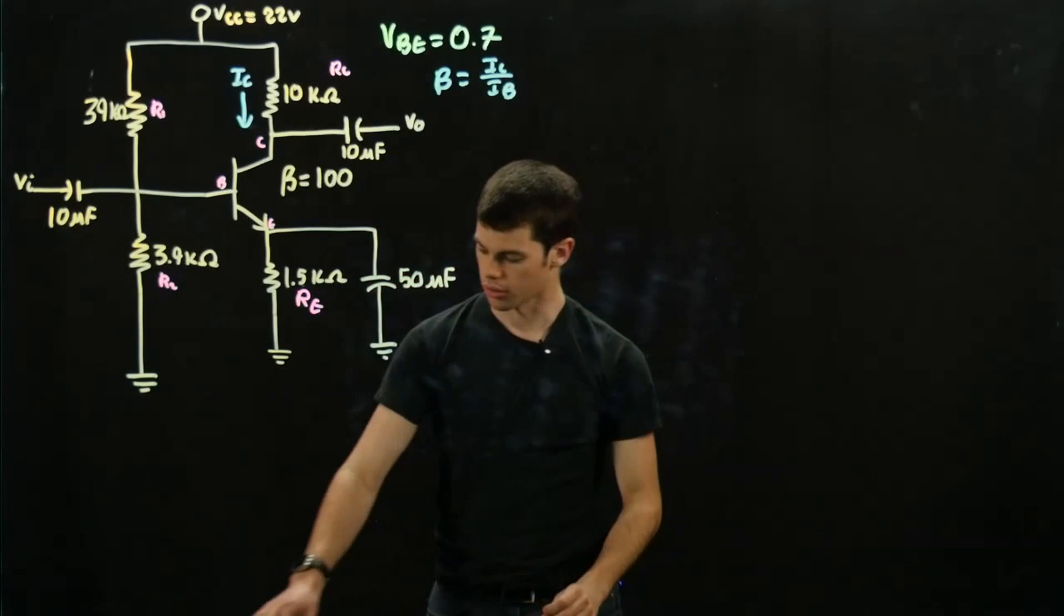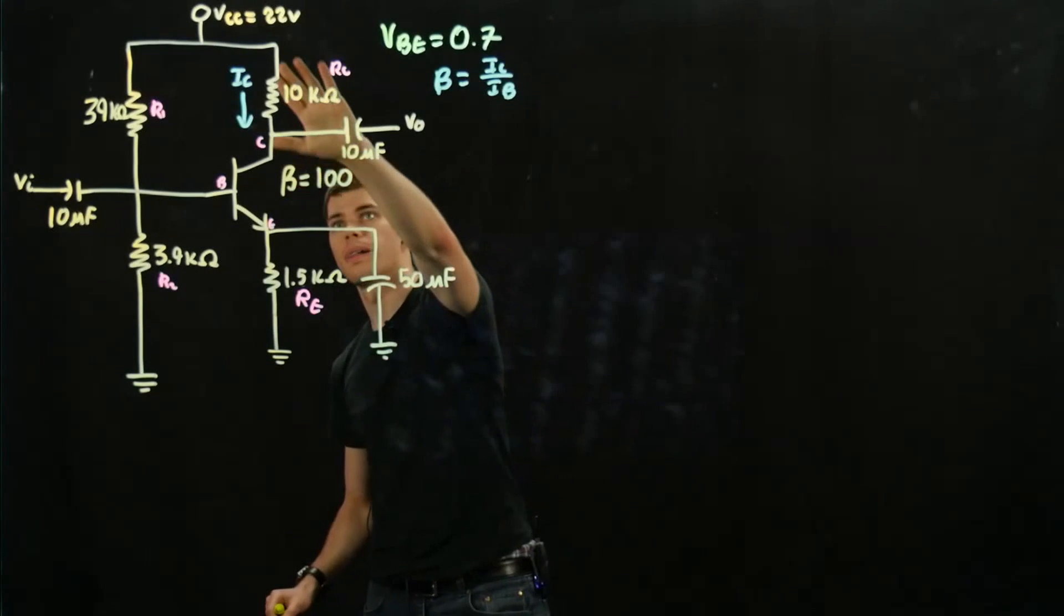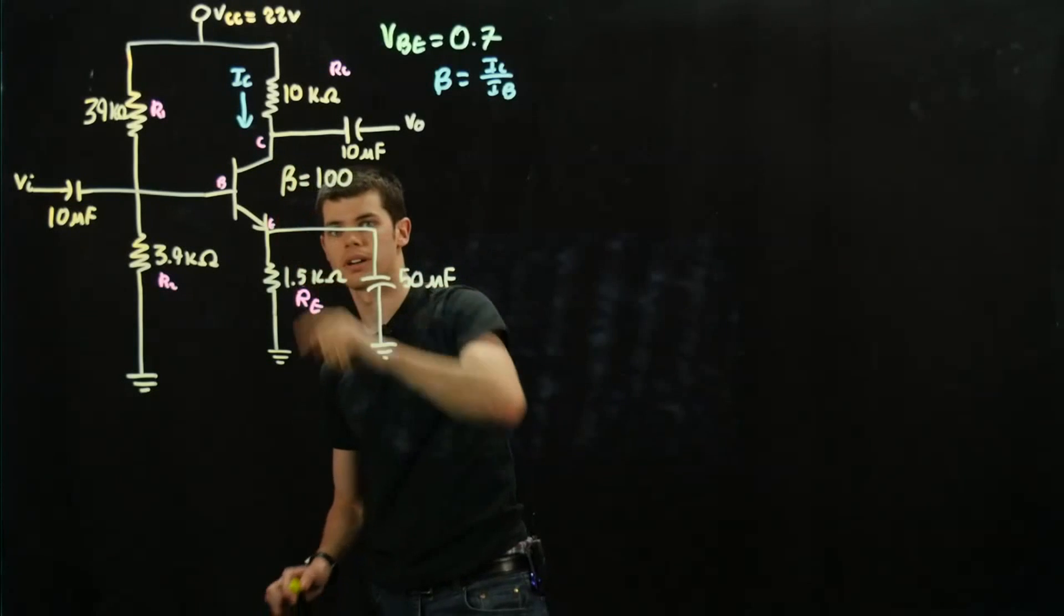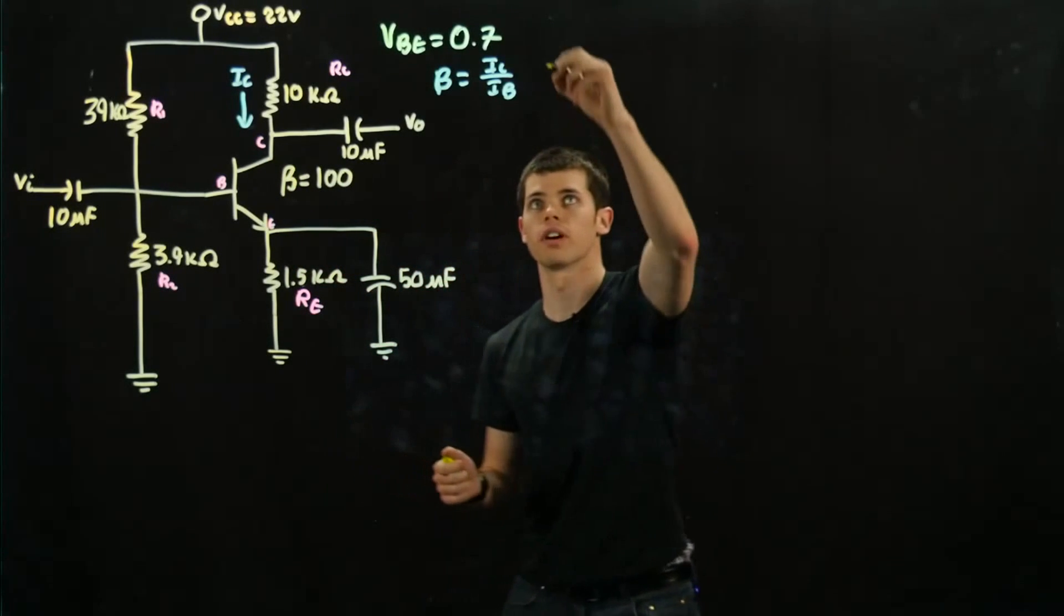Alright, now to start off, we're going to want to solve for VCE, which is the voltage drop across the collector and the emitter. And for this one, once we look at the circuit, we can see that the formula for this